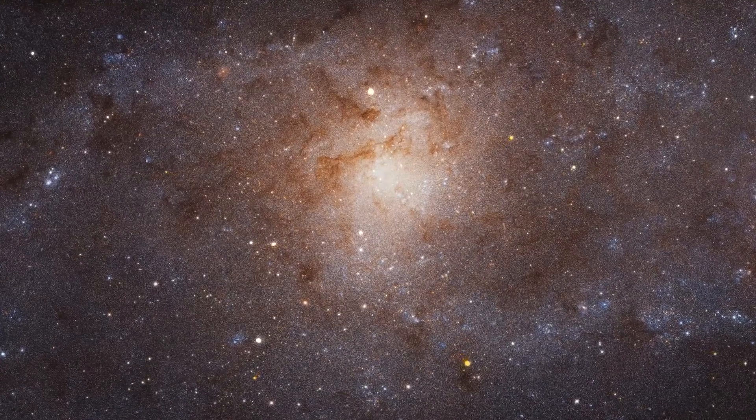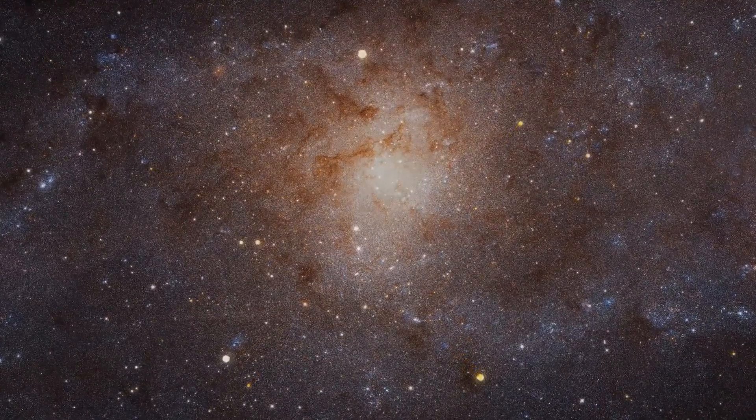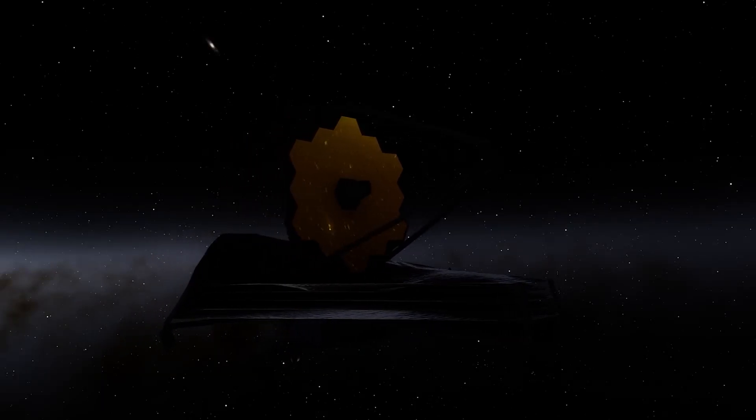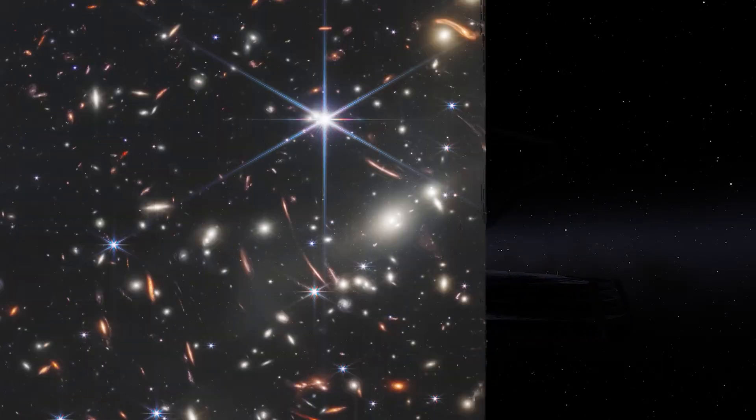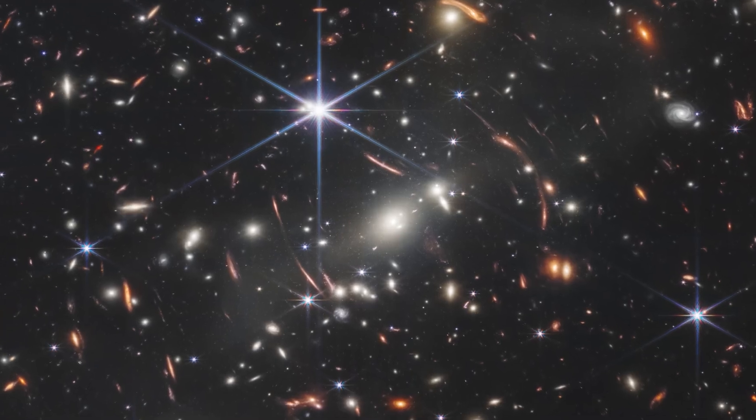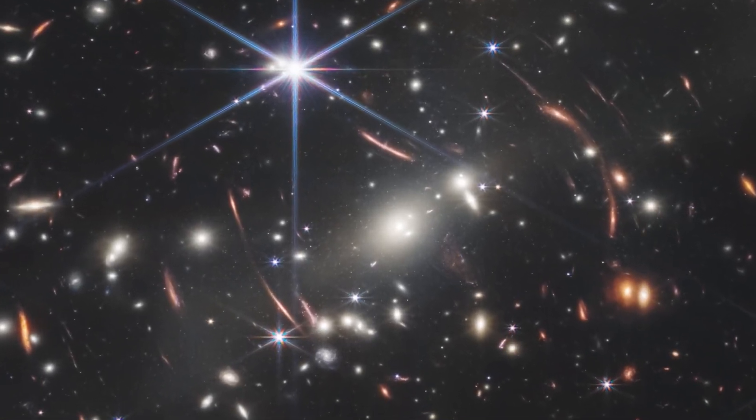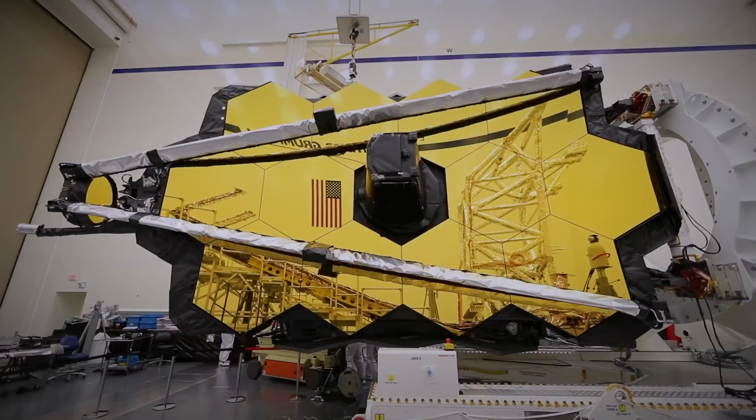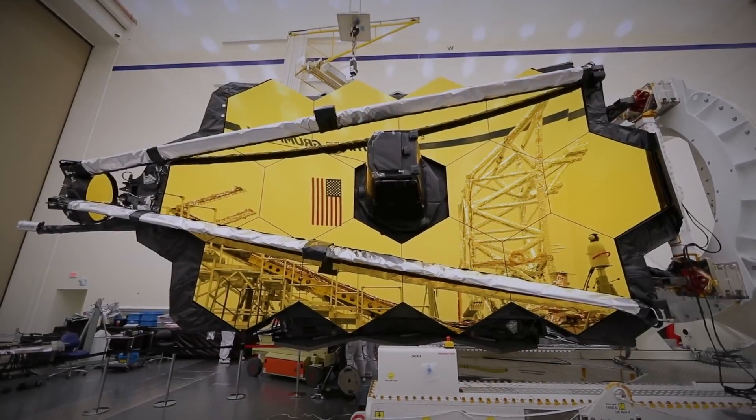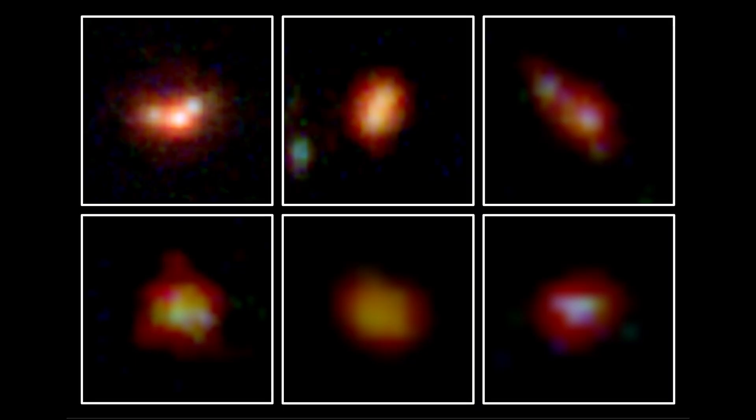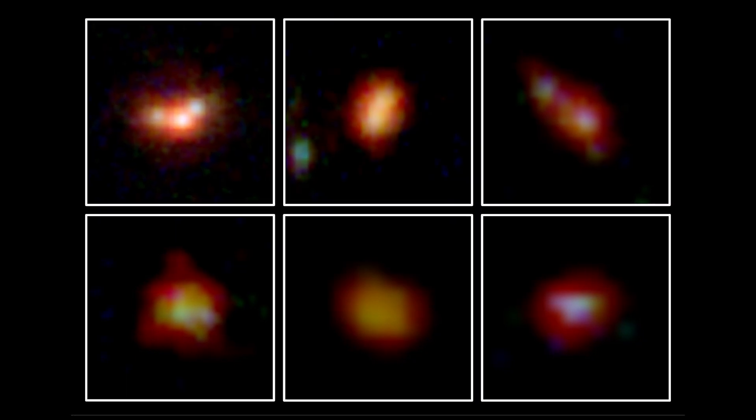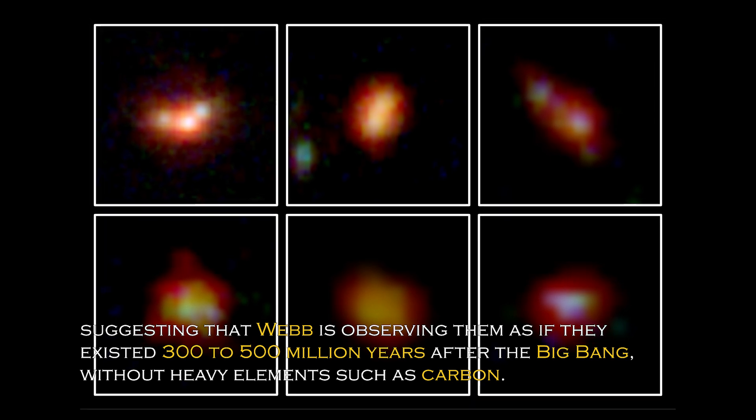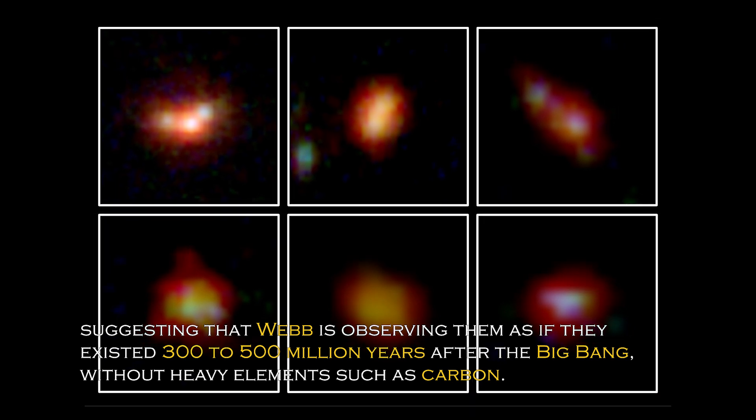This discovery has had a major impact on our understanding of the universe and has prompted NASA to develop even more powerful telescopes than the James Webb Space Telescope to confirm whether our understanding of the Big Bang is correct. Data obtained from Webb's spectrometer and near-infrared camera have revealed that four of the six primordial galaxies have extreme redshifts, suggesting that Webb is observing them as they existed 300 to 500 million years after the Big Bang.